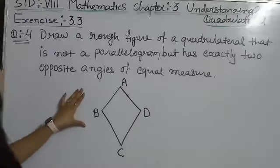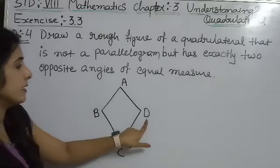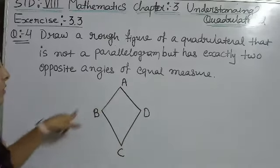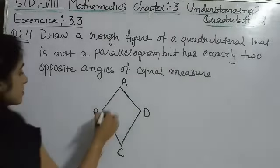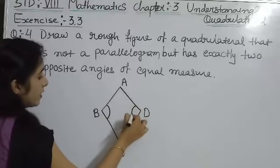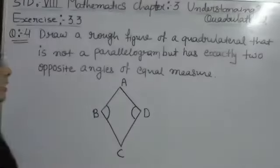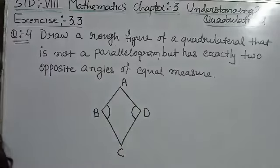Here is the figure of kite. A, B, C and D. Ye quadrilateral hai, lekin parallelogram nahi hoga. Because, jahan pe B aur D, do angles jahan wo equal hongi. A aur C equal nahi hote.